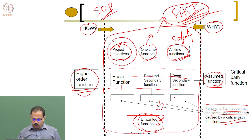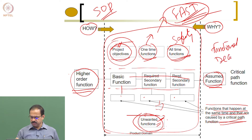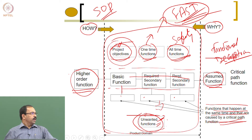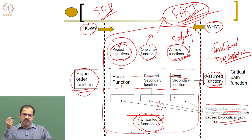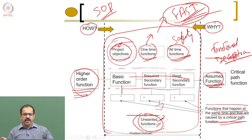This is how you get FAST-based functional decomposition. Compared to SOP, the key difference is that FAST can be used for any new product — not only existing products. As long as you know what input you are giving and what output you are getting, you will be able to find the critical path function.